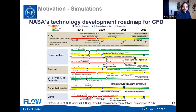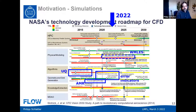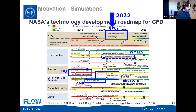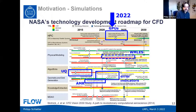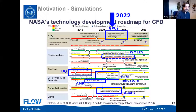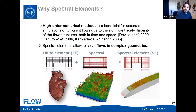We're somewhere in 2022 on that roadmap. A number of aspects I'll talk about today are part of this roadmap: uncertainty quantification, adaptive meshes (AMR — adaptive mesh refinement), error indicators, different computer architectures like GPUs, modeling aspects like LES or wall model LES, and in-situ analysis. These are all aspects thought to be important in CFD going forward.